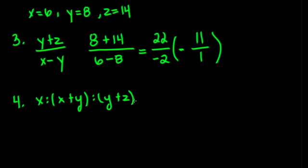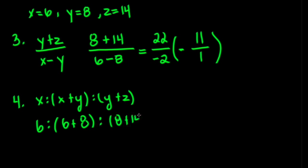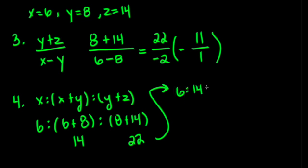For this last problem, we are using the colon form of ratios. We plug in our numbers: 6, colon, (6 plus 8), colon, (8 plus 14). Simplifying the parentheses: 6 plus 8 is 14, and 8 plus 14 is 22. So we rewrite our ratio as 6 to 14 to 22. Since all of these numbers are even, we can divide each by 2. 6 divided by 2 is 3, 14 divided by 2 is 7, and 22 divided by 2 is 11. So our simplified ratio is 3 to 7 to 11.